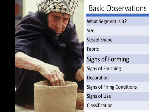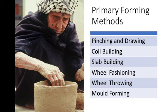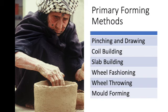One very important aspect of examining pottery is to look for traces of how the vessel was made. Of the primary forming methods, the simplest and crudest are pinching and drawing, which can leave impressions of the potter's fingers.